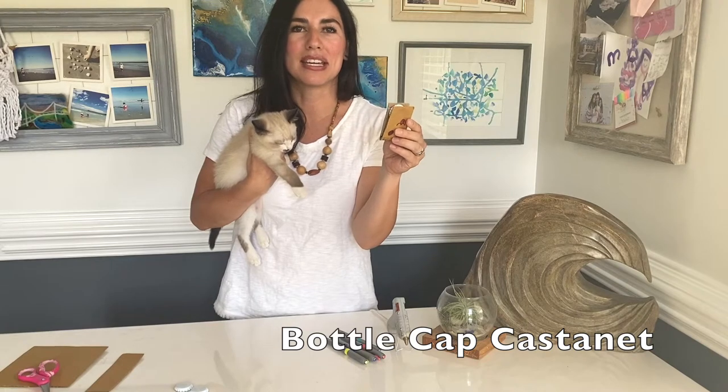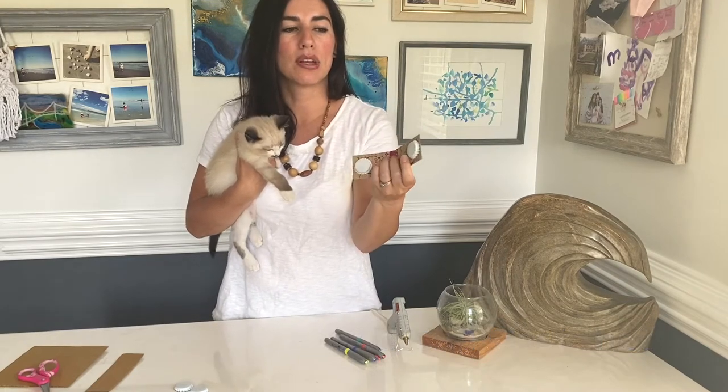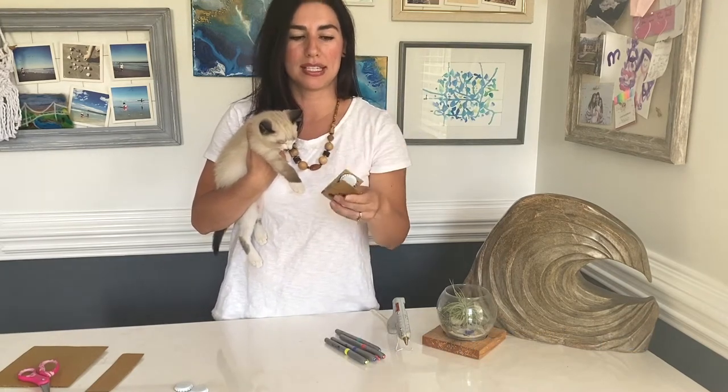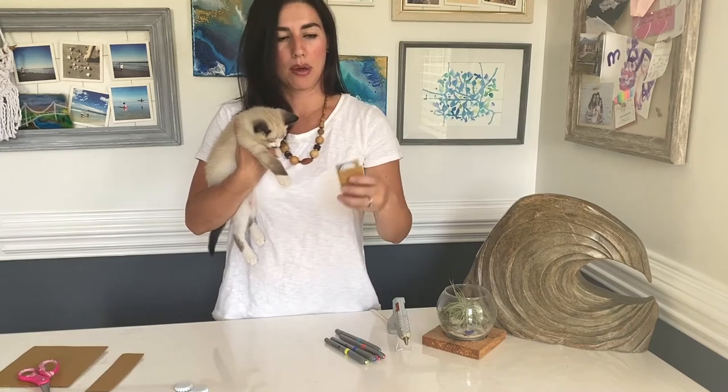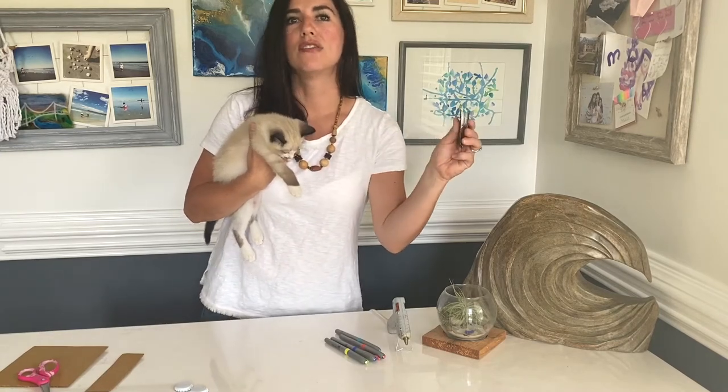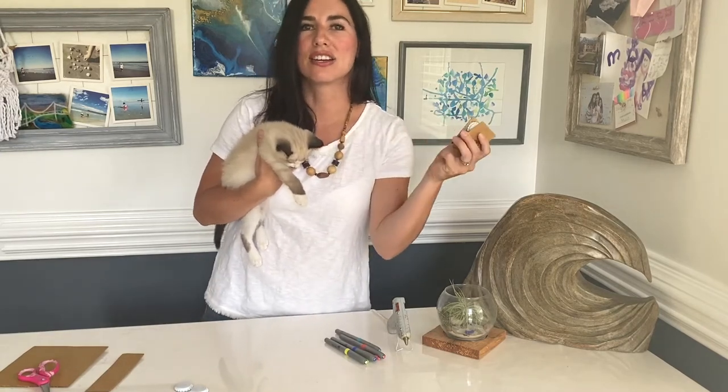A castanet is an instrument that makes a sound when you click the two pieces together. So if you press them like this you've got a sound and then you can start following a beat.